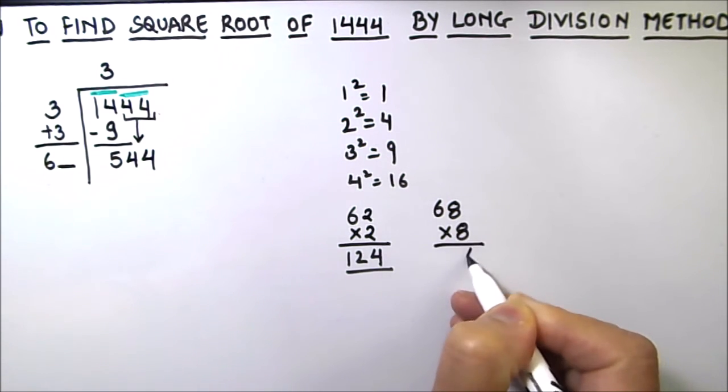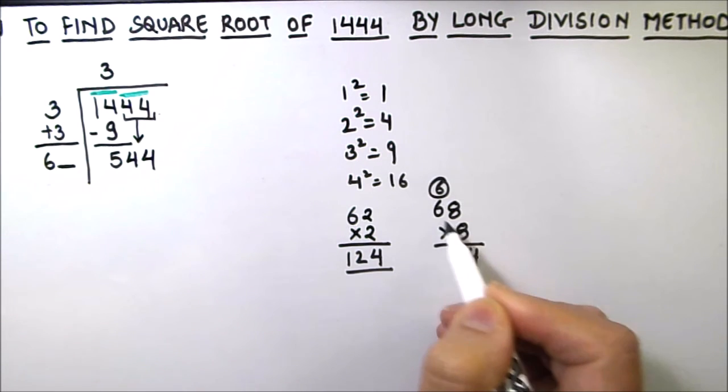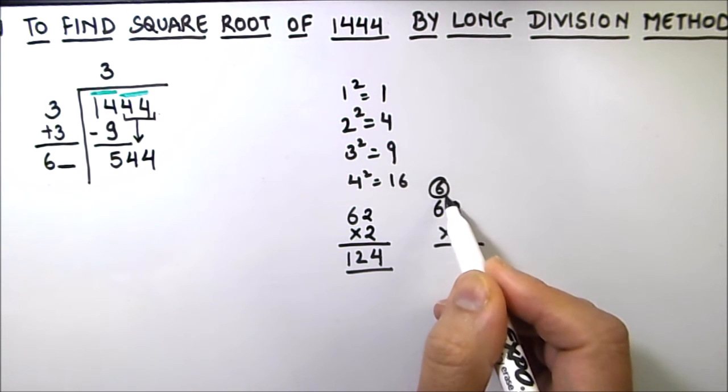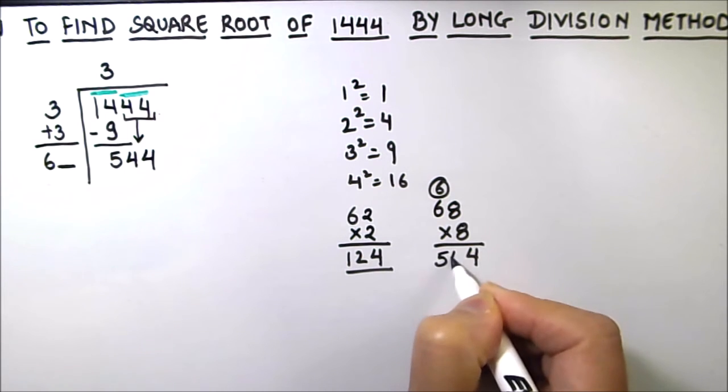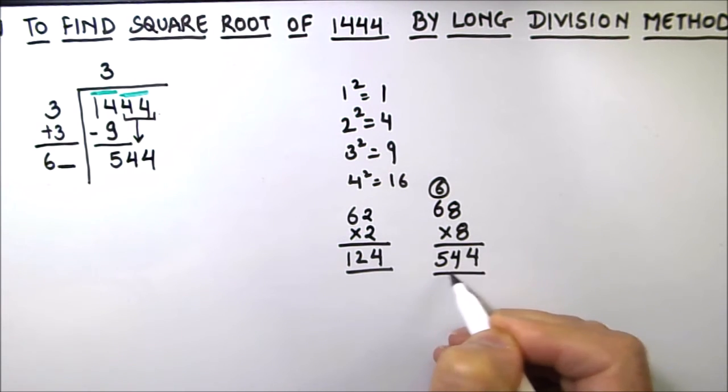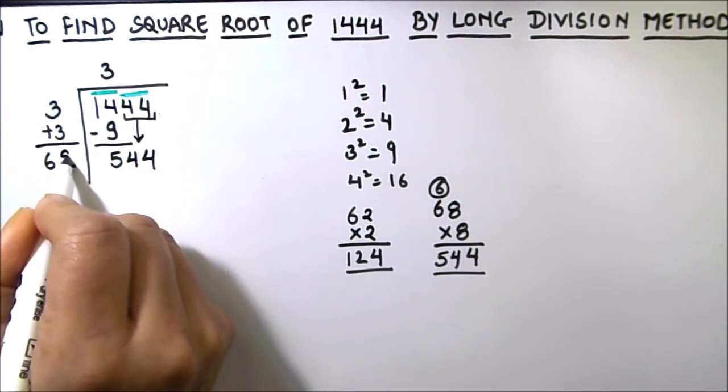So let's try 68 times 8. So 8 times 8 is 64, 6 will be carried over. 8 times 6 is 48, and 48 plus 6 is 54. So we got the same exact number as our dividend. So we will use 8 as our digit in the divisor.